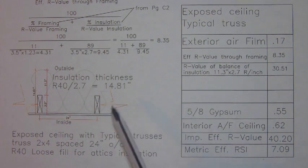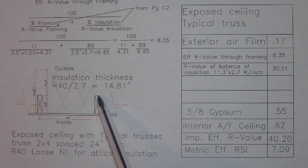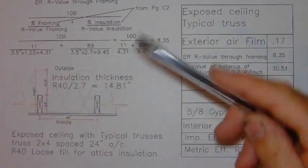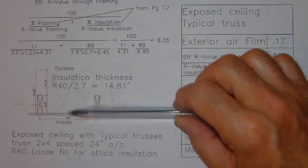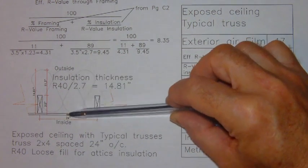Now, the problem is that we do have some framing. We've got this area of framing in here, and so unfortunately that's going to reduce slightly the overall effective R-value of this entire assembly. So we've got a total of 14.8 inches of insulation.